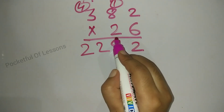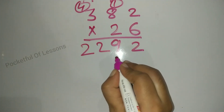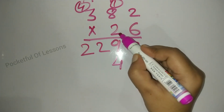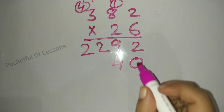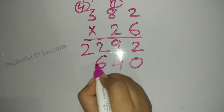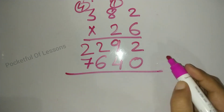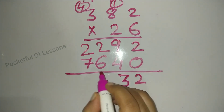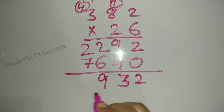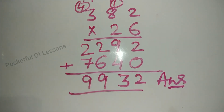Now we do it with 2, the same process as we did with 6, but we write it in the tens place and write 0 in the ones place. Then 2 into 8 is 16 — 6, carry 1. Then 2 into 3 is 6, plus 1 is 7. Now we add both rows: 2 plus 0 is 2, 9 plus 4 is 13 — write 3 carry 1, 6 plus 2 is 8, plus 1 is 9, then 1 and 7. So here is the answer. I hope it is clear to you — if not, please ask me again. Thank you.